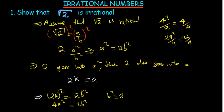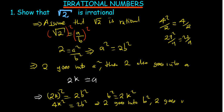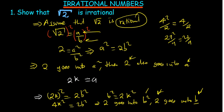This tells us that 2 can also go into B squared. So if 2 goes into B squared, then 2 also goes into B. What we have found is that 2 can go into A and 2 can also go into B. But for a rational number, A and B are co-primes — the only number that can go into both of them is 1. So this tells us our assumption is wrong.